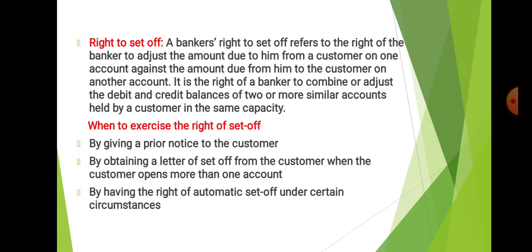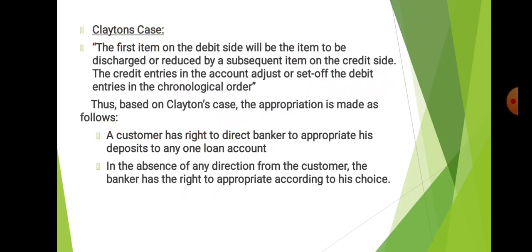Next, let us understand what is Clayton's Case. The first item on the debit side will be the item to be discharged or reduced by a subsequent item on the credit side. The credit entries in the account adjust or set-off the debit entries in chronological order.